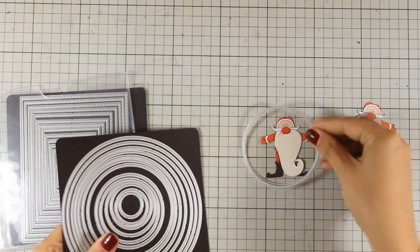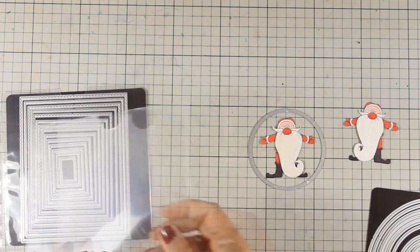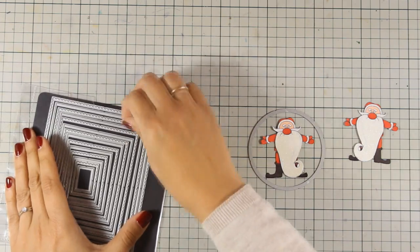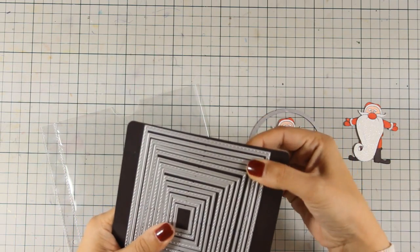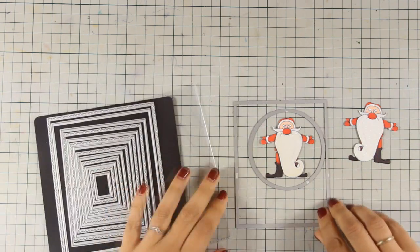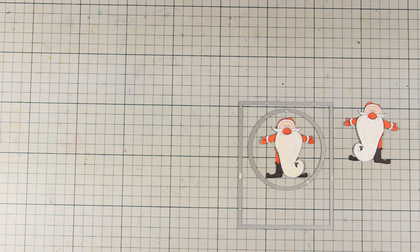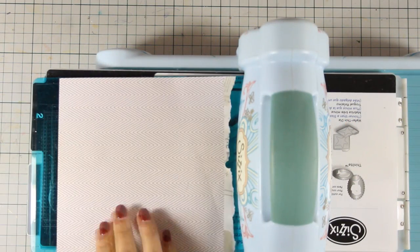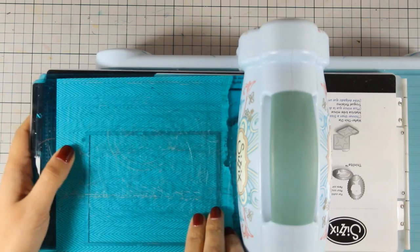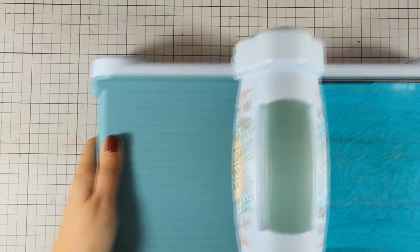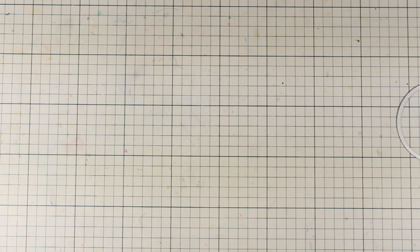I am using dies by Tonic Studios and I'm going with one that has a scallop edge — I'm just trying to decide which one to use. I decided to go with those two and I'm going to use my die cutting machine to cut out a pattern paper. This is a pattern paper with a very subtle red and white design. I'm going to cut it out and then place my panel on top of my card base.